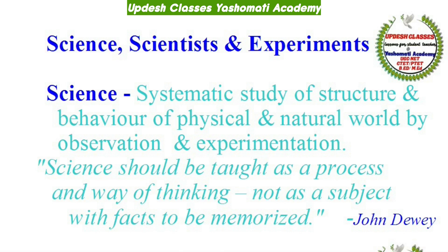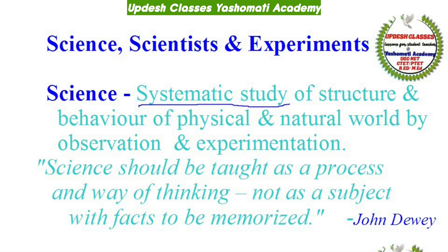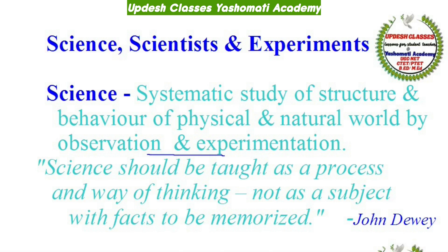आम तौर पर political science, computer science जैसे subjects छूट जाते हैं, लेकिन ये भी science से related subjects हैं। Science is systematic study of structure and behavior of the physical and natural world by observation and experiment। यानि कोई भी subject या discipline जिसको systematic study में, observation या experimentation के द्वारा सीखा जाए — that will be called as science।